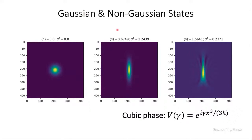As examples of Gaussian and non-Gaussian states: on the left we see the vacuum state; in the middle we see the vacuum state after applying a squeezing operator, which is still a Gaussian state but has an anisotropic distribution. However, if we apply a non-linear gate such as the cubic phase gate, things get very complicated and the computational complexity of calculating the Wigner function increases significantly.